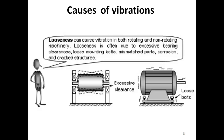Looseness can cause vibration in both rotating and non-rotating machines. Looseness is often due to excessive bearing clearances, loose mounting bolts, mismatched parts, corrosion, and cracked structures. Here you see a rotor with a shaft supported by bearings — if the clearance between the shaft and the bearing hole is excessive, and the shaft is loosely mounted, then when the machine is operated the rotor will wobble and vibrate severely.